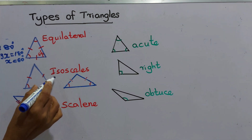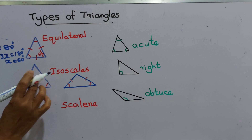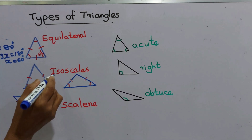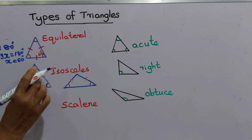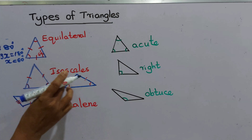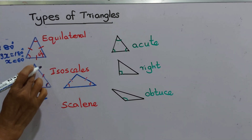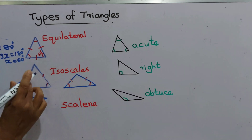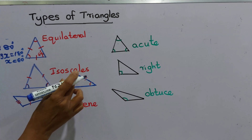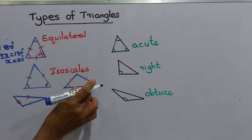Next, we come to the isosceles triangle. In an isosceles triangle, only the length of two sides are equal. The base angles of these two equal sides are also equal. We can identify two types of isosceles triangles: acute triangles and obtuse triangles. In an acute isosceles triangle, the two sides are equal and the two base angles are also equal. In an obtuse isosceles triangle, likewise, the two sides are equal and the base angles are also equal.